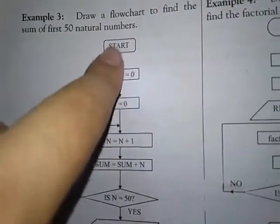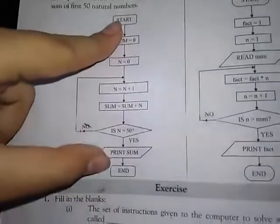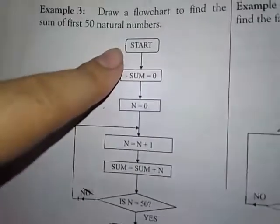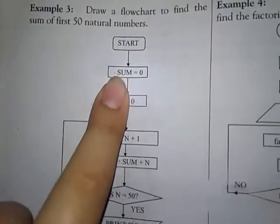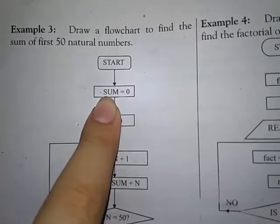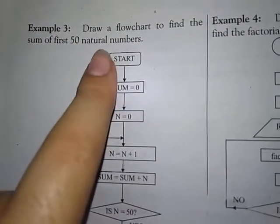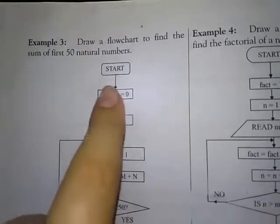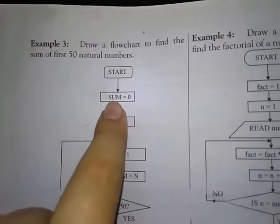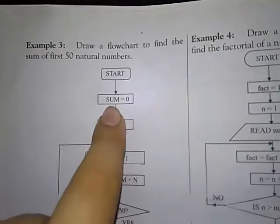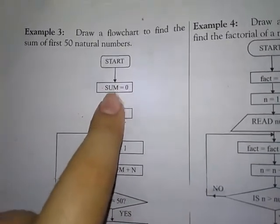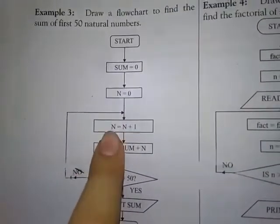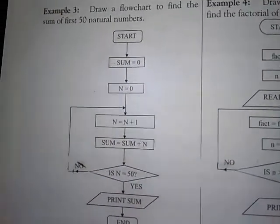Flowchart میں سب سے پہلے terminal symbol میں 'start' لکھیں اور آخر میں 'end'۔ اس کے بعد sum کو zero سے initialize کروائیں، اور n کو بھی zero سے initialize کریں کیونکہ آپ نے پہلے natural number سے شروع کرنا ہے۔ پس sum = 0 اور n = 0 سے چلیں گے۔